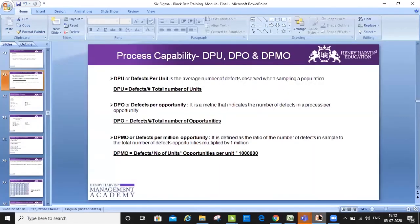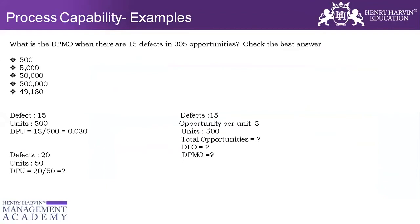This is something which we do when we calculate the process capability for discrete data. DPMO is equal to defects divided by total number of units into opportunities per unit, which is DPO multiplied by 1 million. This is how DPMO is being calculated. I have certain examples which I want to give you — I want you to calculate it.